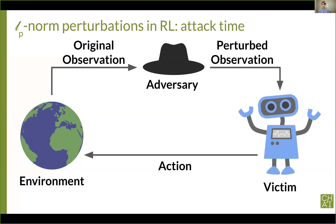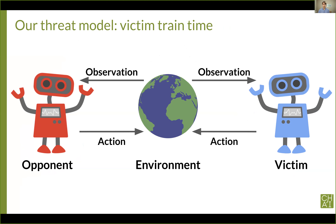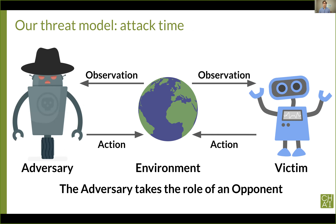We propose a novel and more realistic threat model. Our key insight is that real-world RL agents inhabit natural environments populated by other agents, including humans, and these other agents can only modify observations indirectly via their actions. We therefore focus on competitive multi-agent environments. The victim is trained via self-play to win against an opponent, and at attack time, we substitute the opponent with an adversary. Critically, this adversary doesn't have any special powers — it can only take the same set of actions as the original opponent. This ensures the observations the victim receives are physically realizable.